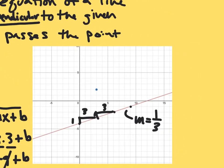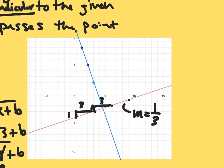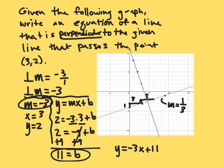We can come over to the graph and draw this line — going up three to the left one, up three to the left one, up three to the left one — which gives us a y-intercept at eleven. Eleven is a bit cut off on the graph, but we can draw the line through all those points, and that makes it a perpendicular line.